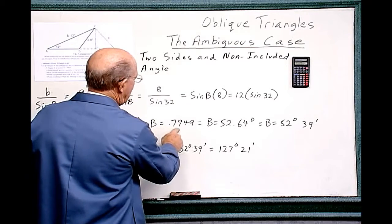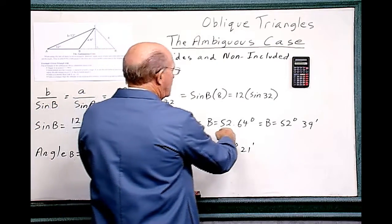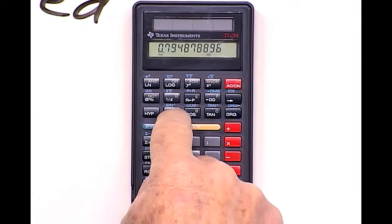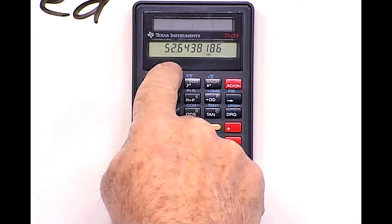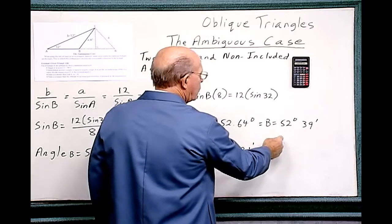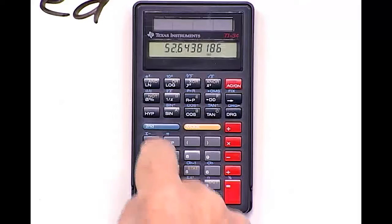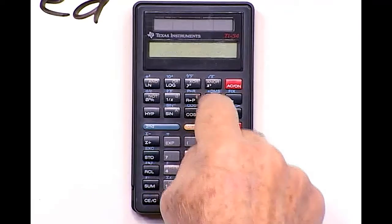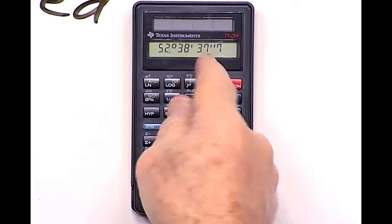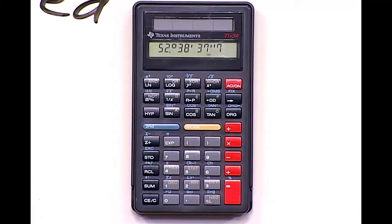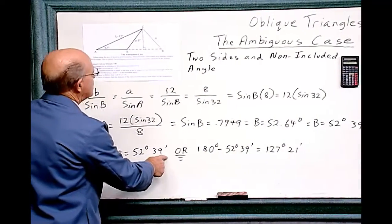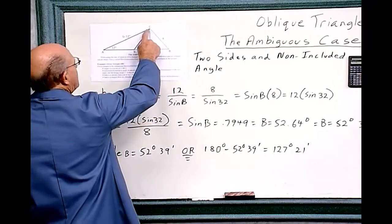Sine B equals 0.7949. Now we want to convert that into degrees and minutes. Hit the inversion button, then the degrees button: 52 degrees, 39 minutes. So angle B is 52 degrees, 39 minutes. That's this angle over here, angle B.